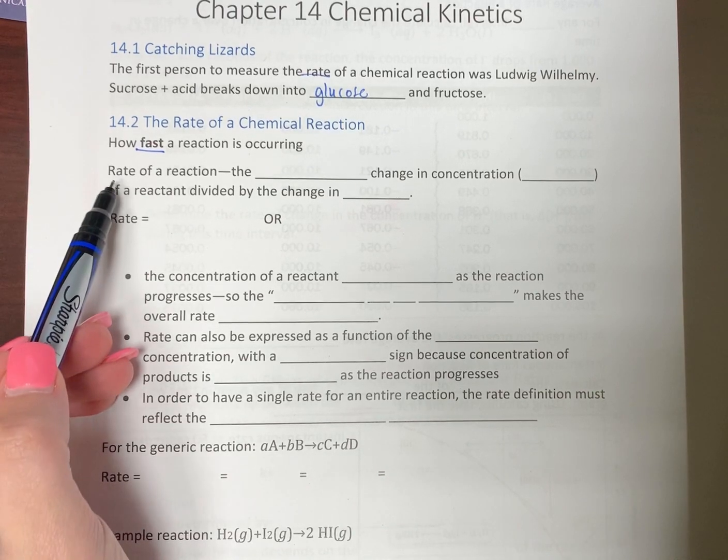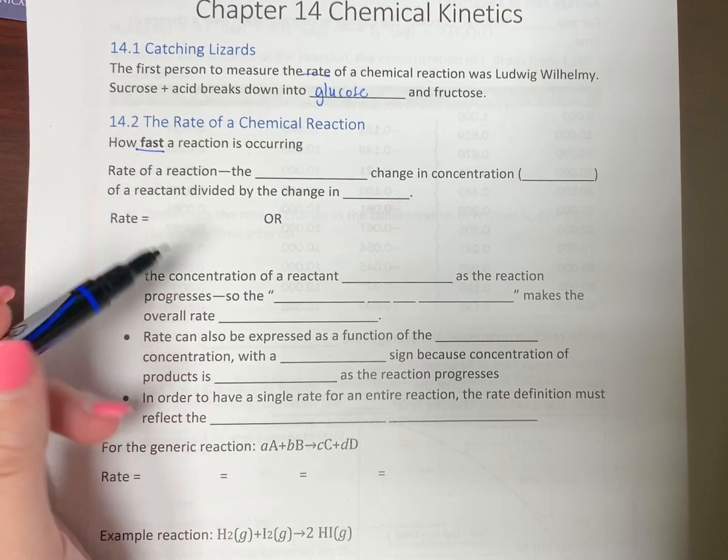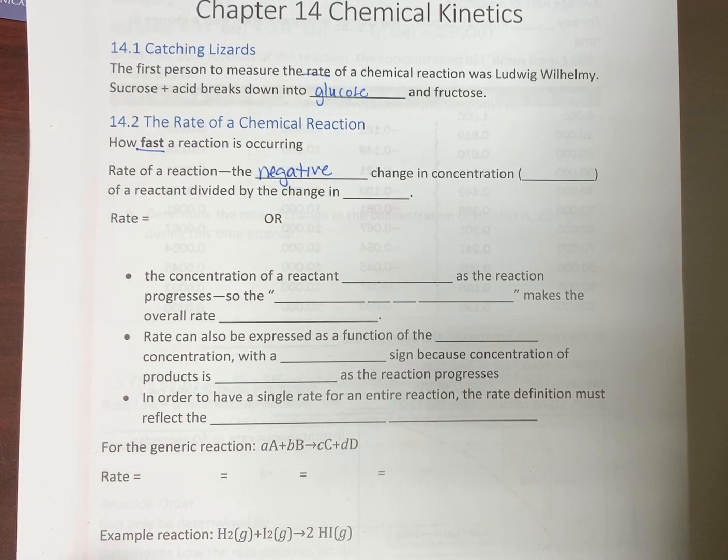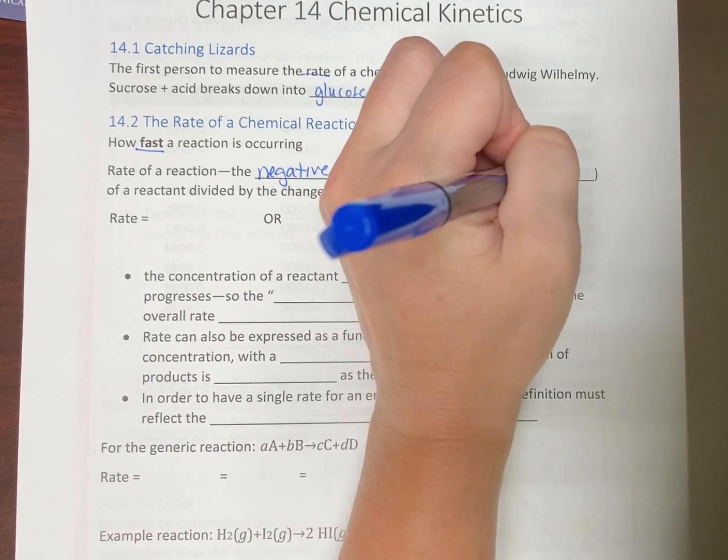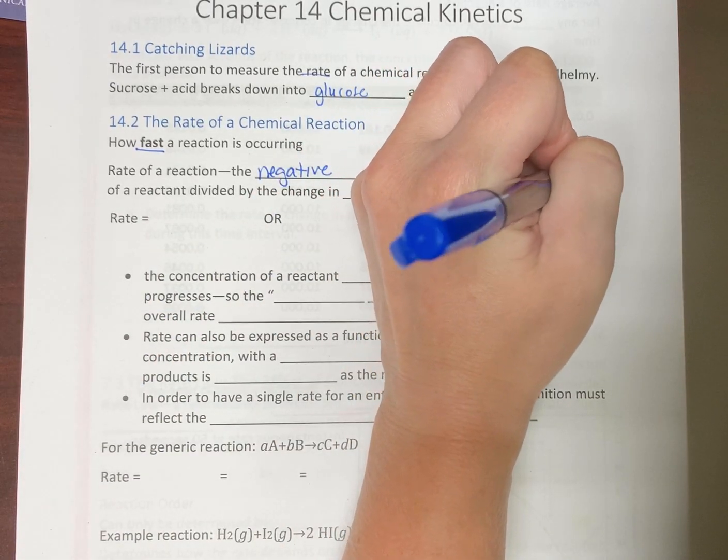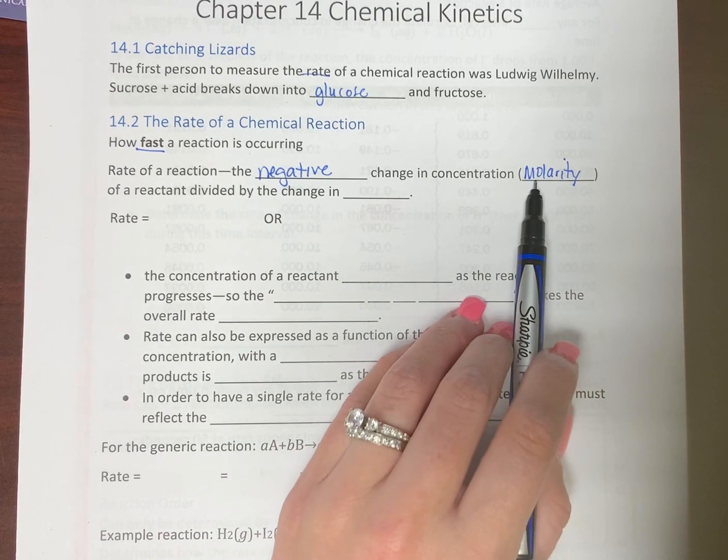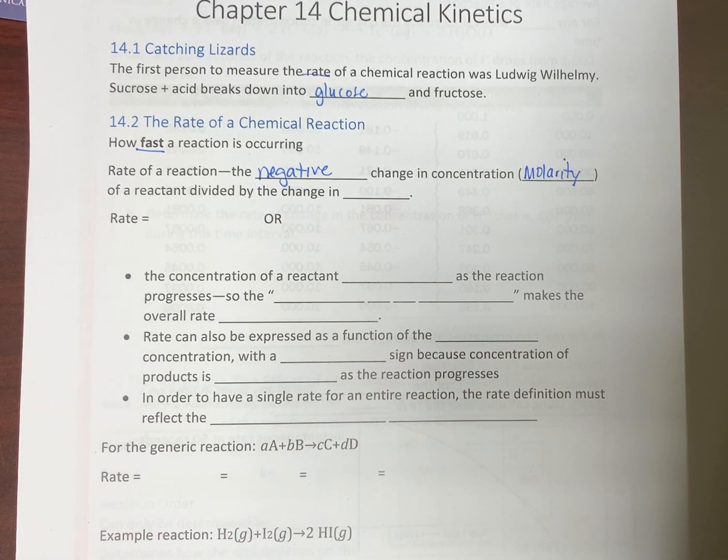Let's define it. The rate of a reaction is the negative change in concentration. Here you're going to like this. When we're dealing with rates, we are only dealing with molarity. All of the eight different types of concentrations or thirteen depending on how you counted it, we only care about molarity here. So rates, molarity.